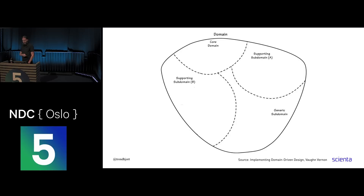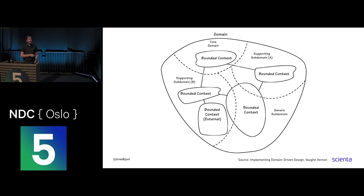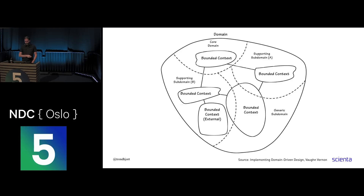This next one is from Vaughn Vernon's book — and I believe he spoke here yesterday. Here you have a list of domains using core, supporting, and generic types. How would the bounded context fit here? Ideally you want bounded contexts to be one-to-one with a domain, but very often — more often than not — they're not. If you come from a monolith, you may have a bounded context that crosses many domains, maybe even all of them if it's a really big one.